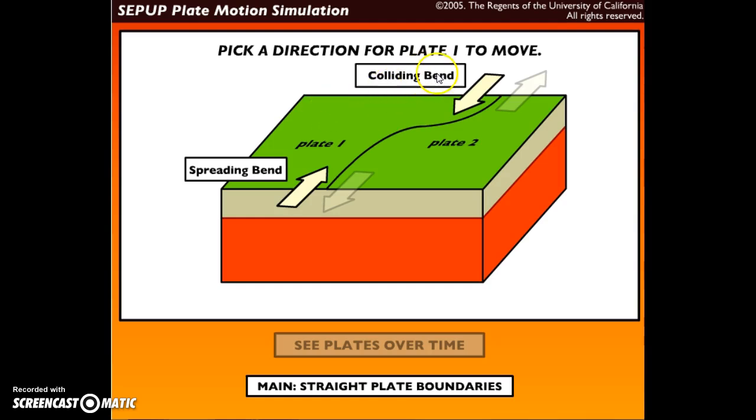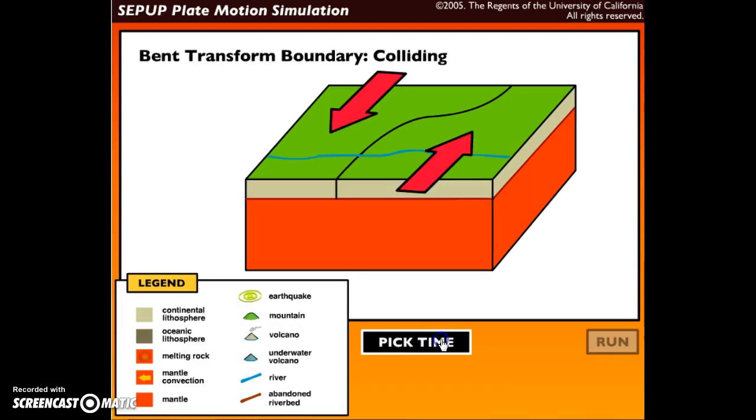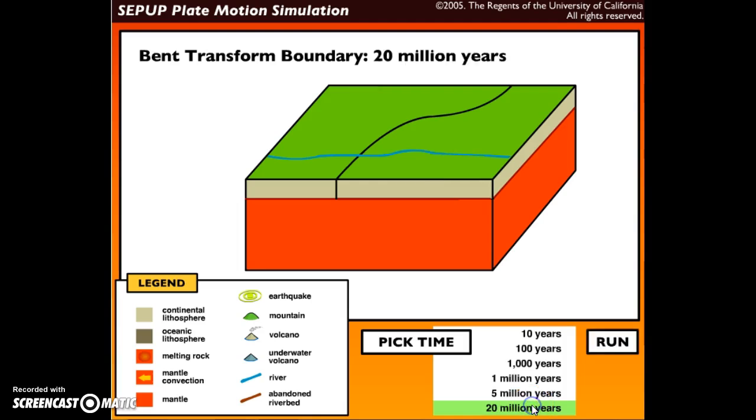When it's a colliding bend, I'm going to see these plates over 20 million years. As I'm watching, I'm going to look at this legend or key and identify what geologic features or events are formed because of these bent colliding transform fault boundaries.